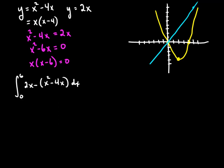I'm going to simplify the integrand first. When I do that, I'm going to get 6x minus x squared. And we're ready to find the antiderivatives.